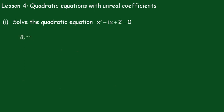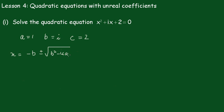So a is equal to 1, b is equal to i, and c is equal to 2. The formula is x equals minus b plus or minus square root of b squared minus 4ac, all over 2a.